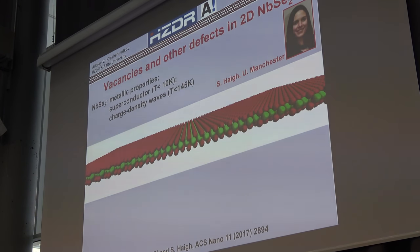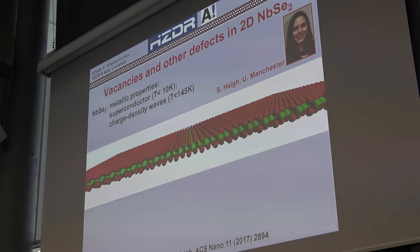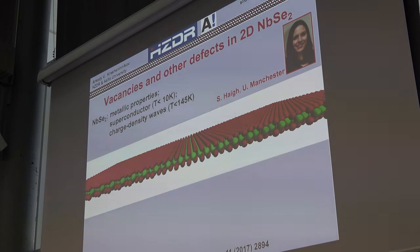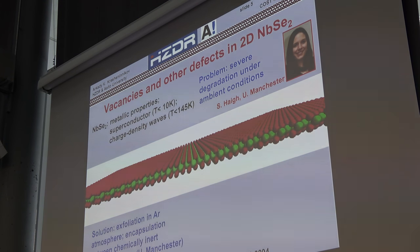Just an example of why these composite materials are interesting — not only for tuning the electronic properties and optoelectronic properties, but also in a quite unexpected way for protecting some reactive 2D materials from the environment. For example, niobium diselenide is a very interesting material. It can be a superconductor or a charge density wave insulator. The thing is that the material is very reactive and can easily be destroyed under ambient conditions.